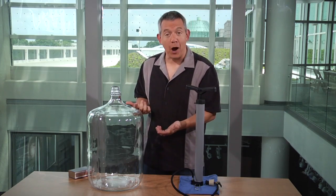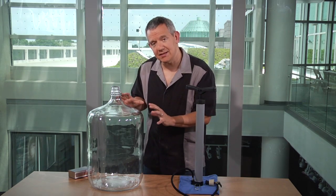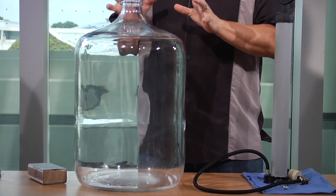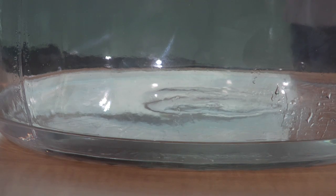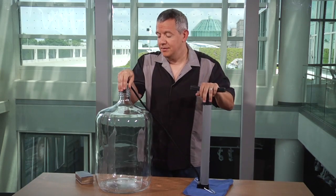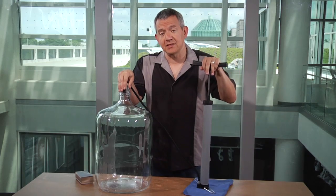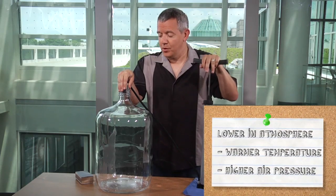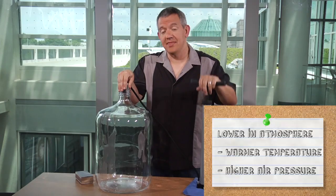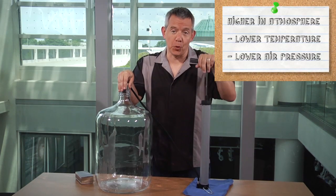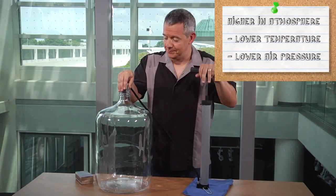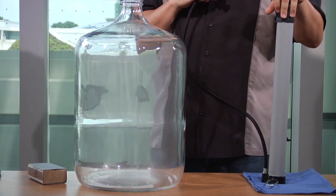Inside this bottle we're going to create an environment that simulates the atmosphere. I've already added a little bit of water inside to increase the amount of water vapor available. Now I'm going to apply pressure — this increases the temperature and simulates the lower levels of the atmosphere, warmer temperatures, higher pressure. When I release the pressure, it'll be like higher up in the atmosphere: lower temperatures, lower pressure. Here we go.